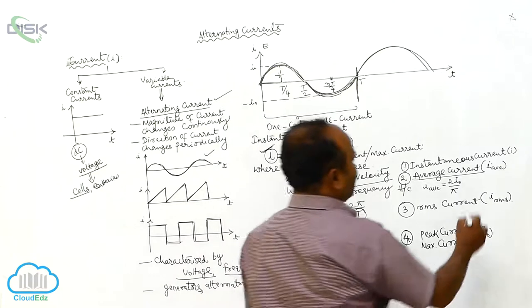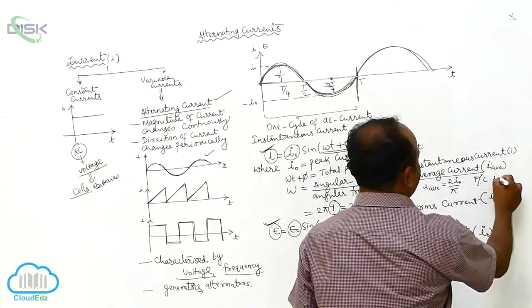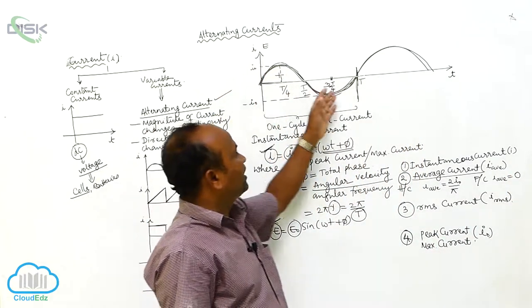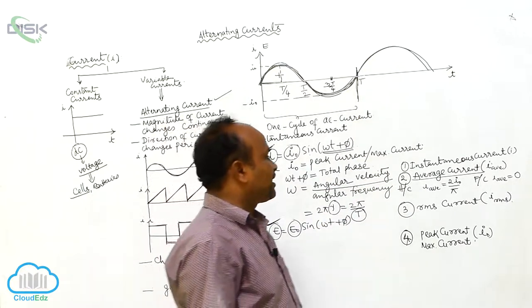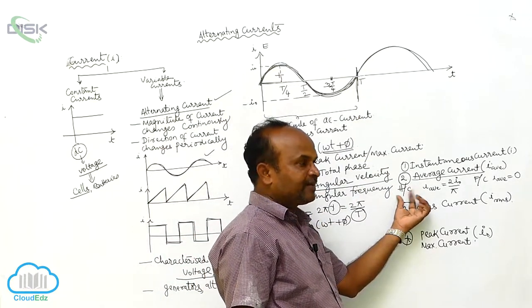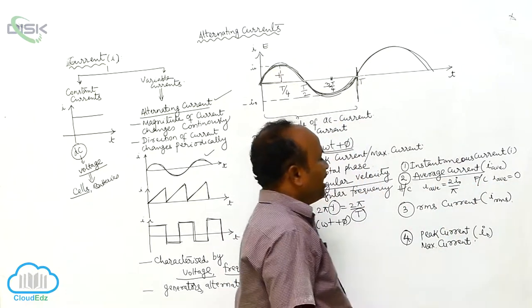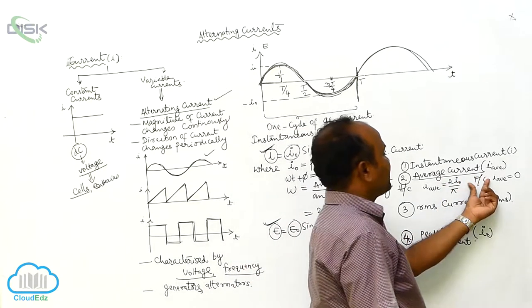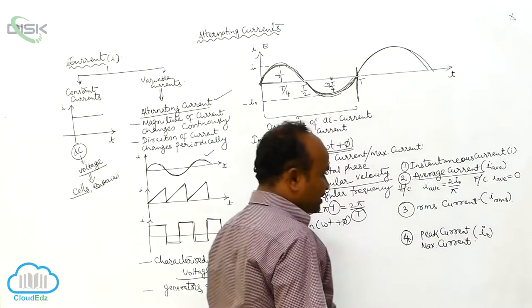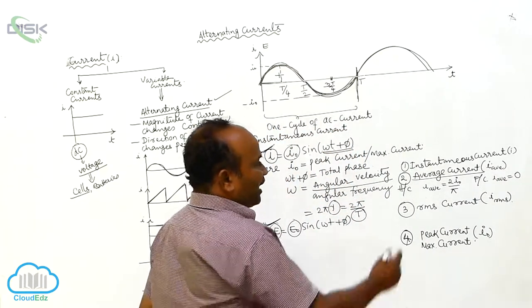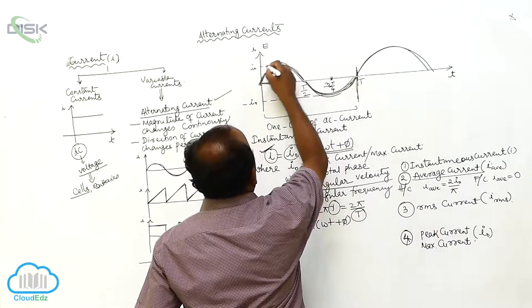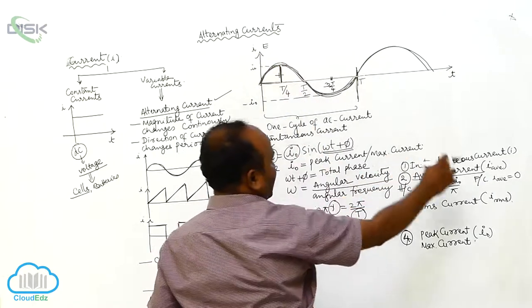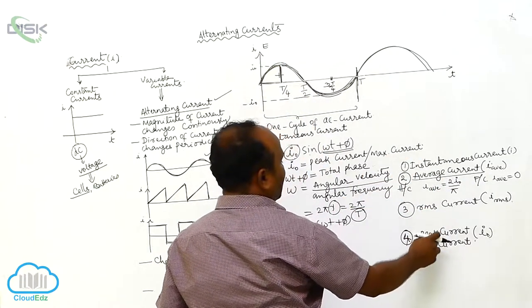In the full cycle, the average current I_average is equals to 0. Therefore, in the case of alternating current, average current can be defined in the half cycle as 2I₀/π, and in the full cycle it equals zero. I₀ is the peak current, or maximum current.